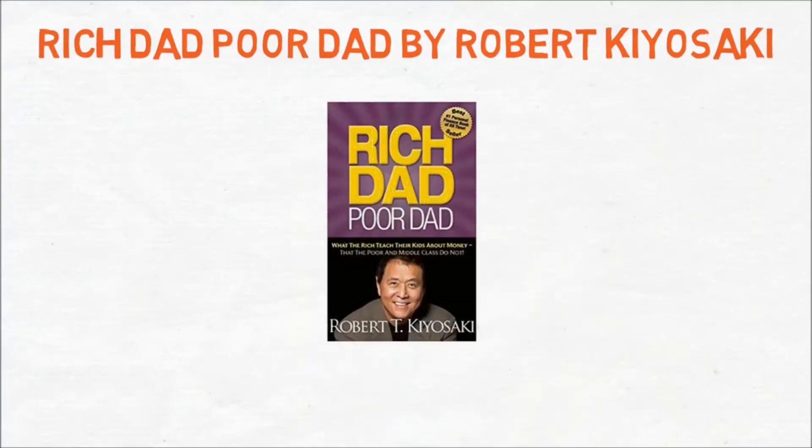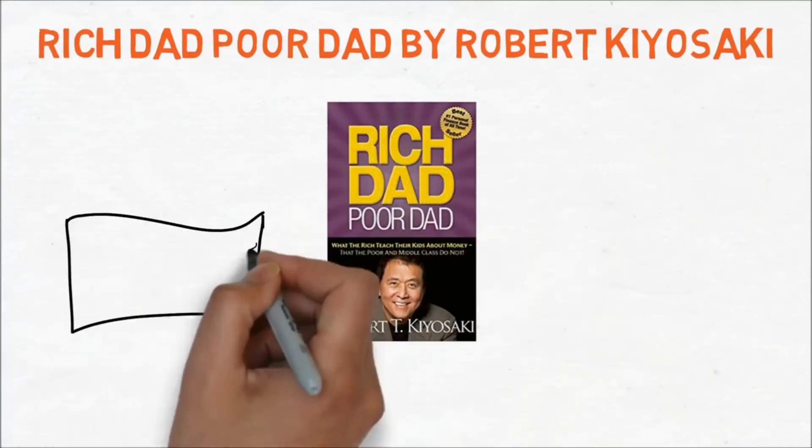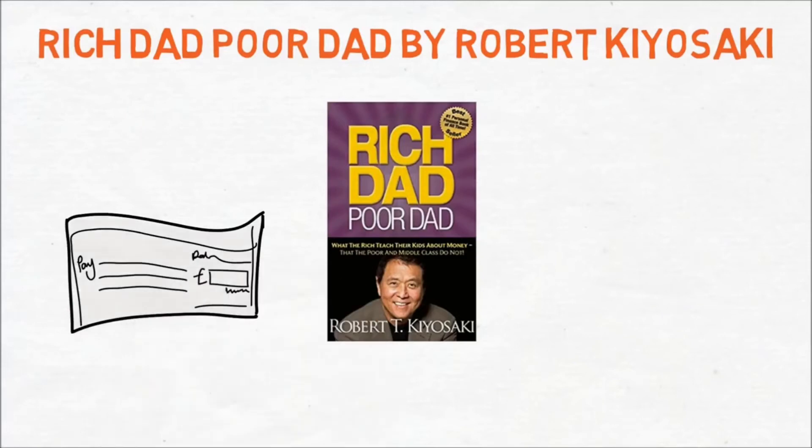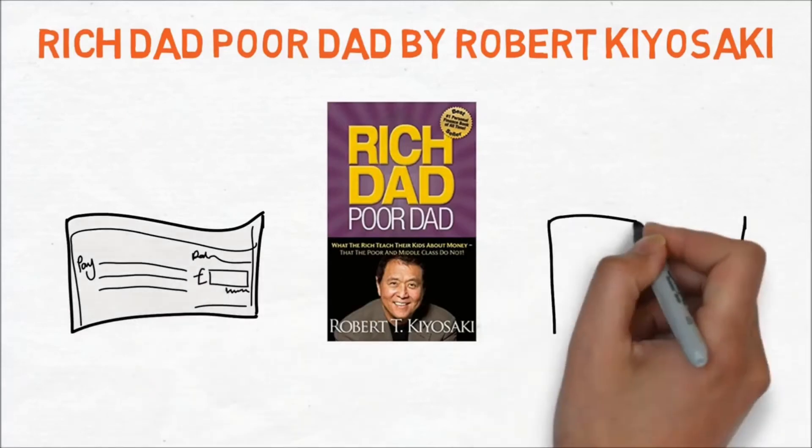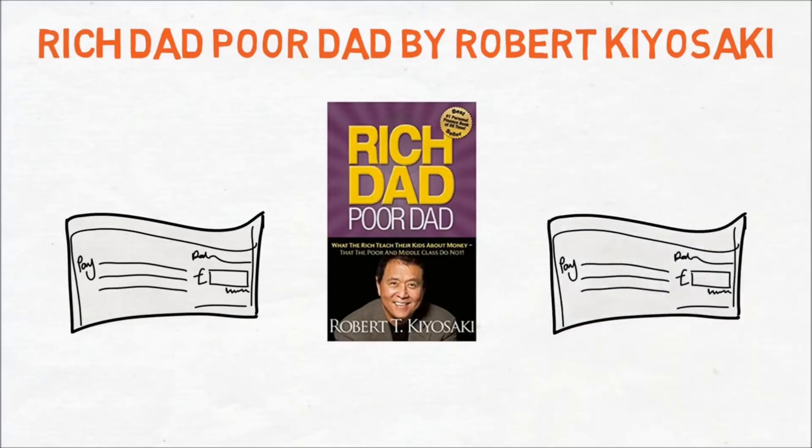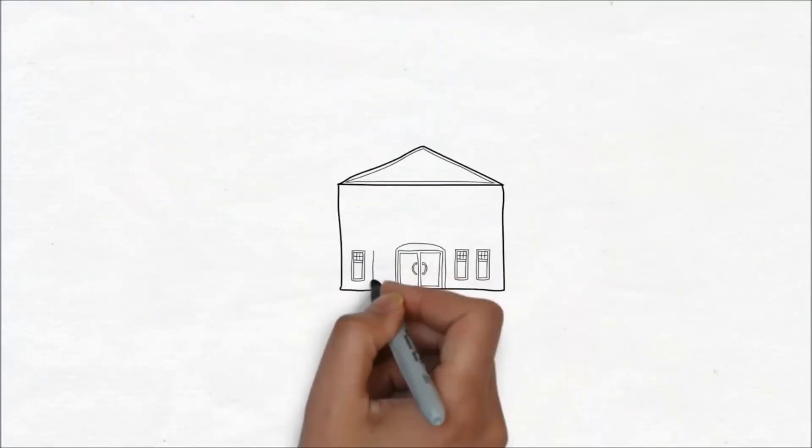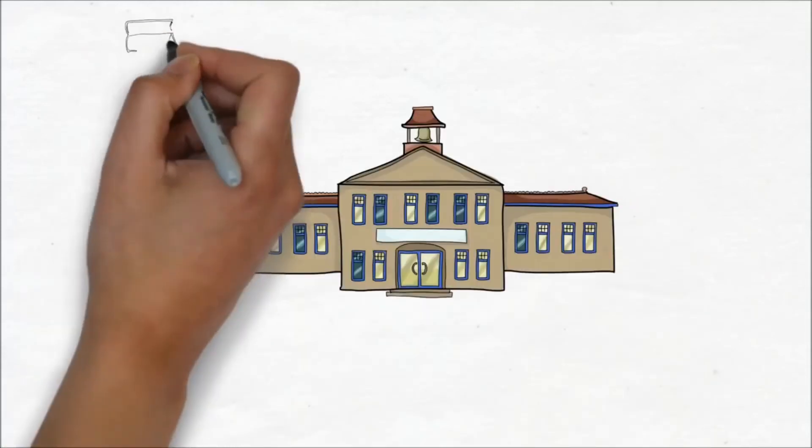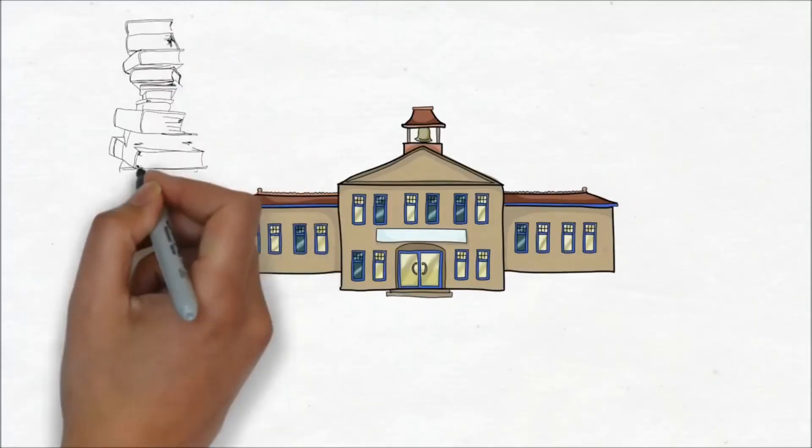While poor dad invested time and effort in education, he did not have any knowledge on investing. On the other hand, his rich dad was very skilled in the investment game because that was all he did. Robert observed both fathers with different thinking and when he was 9 years old, he realized that his rich dad made much more sense than his poor dad. So he listened to his rich dad's advice and followed that.